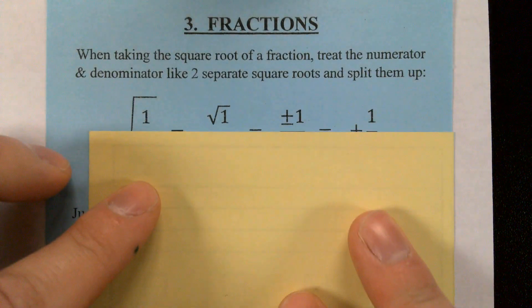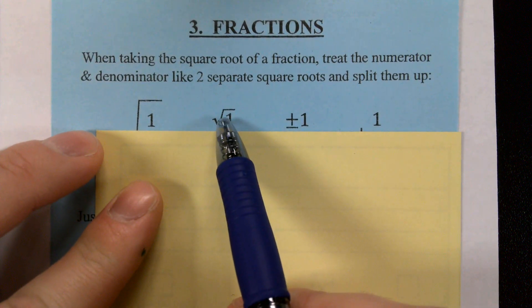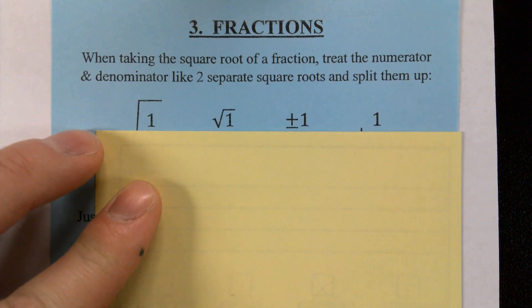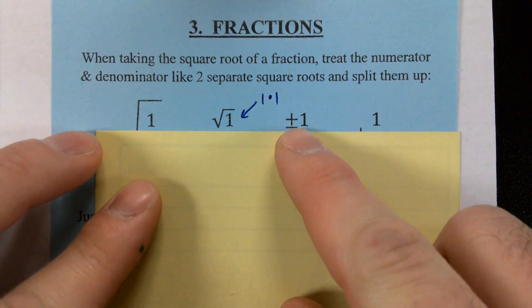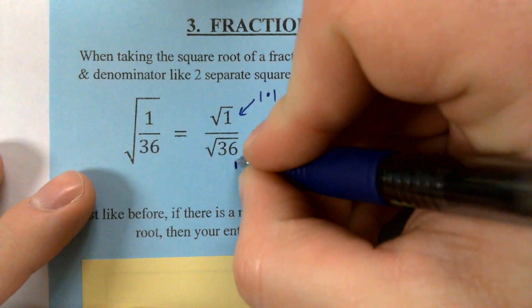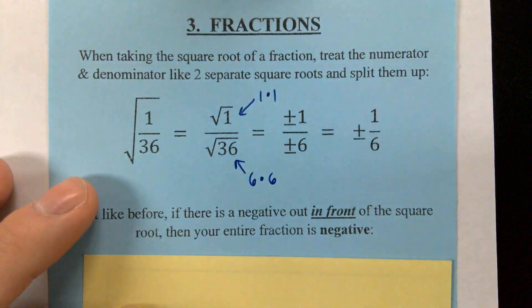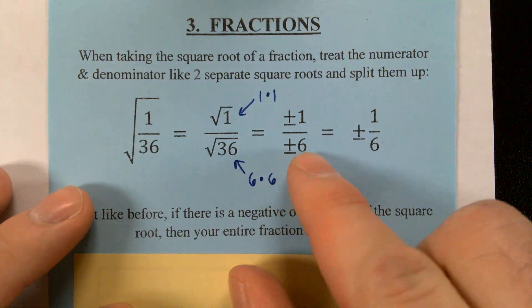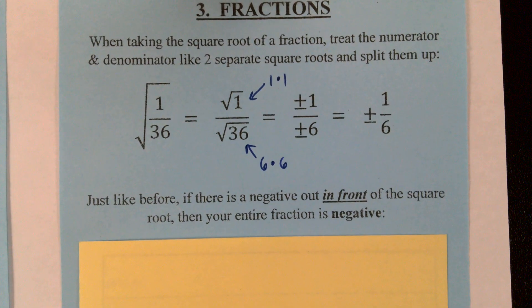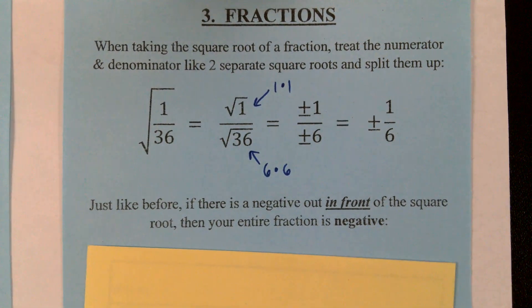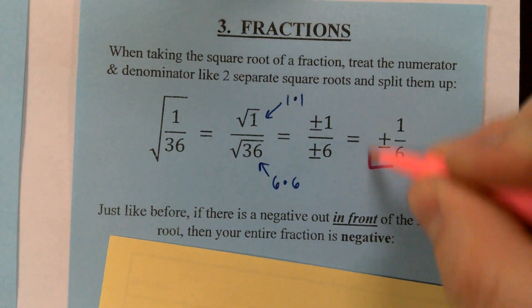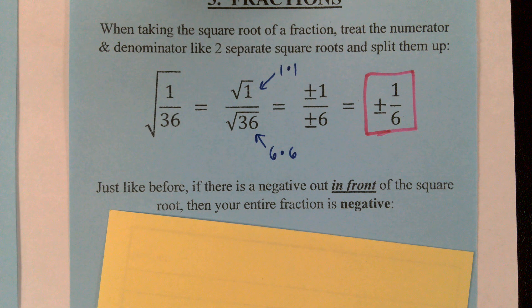Looking at the top: the square root of 1 is just 1 times 1, so our result is going to be plus or minus 1. Looking at the bottom: 36 is just 6 times 6, so our new denominator is going to be plus or minus 6. We don't need two plus or minus signs in there — we can just bring it out in front to make it neater, and our answer is plus or minus 1 over 6, because it could be negative one-sixth or positive one-sixth.